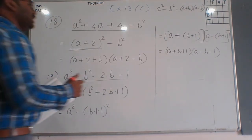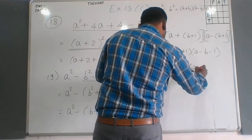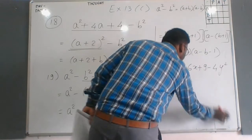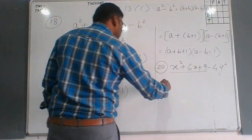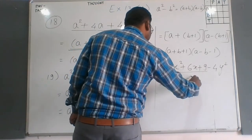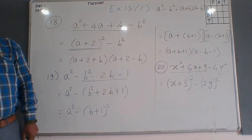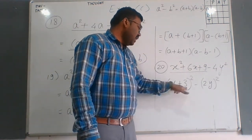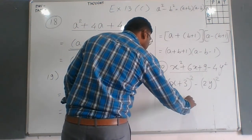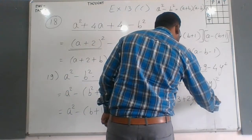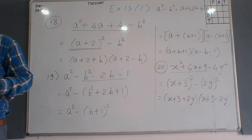We are also solving question number 20: x²+6x+9 minus 4y². The first three terms are the perfect square of (x+3), and 4y² is the complete square of 2y. So it becomes (x+3)²-(2y)², which gives (x+3+2y)(x+3-2y). This is the final answer for question 20.